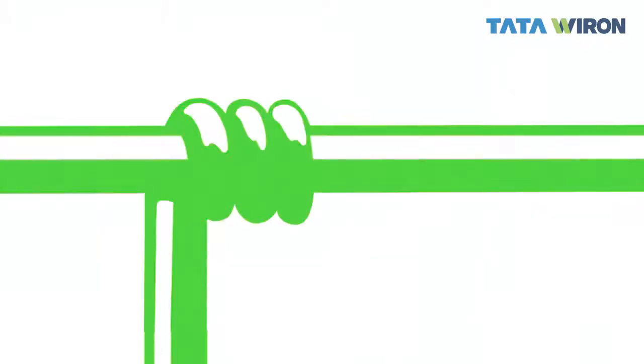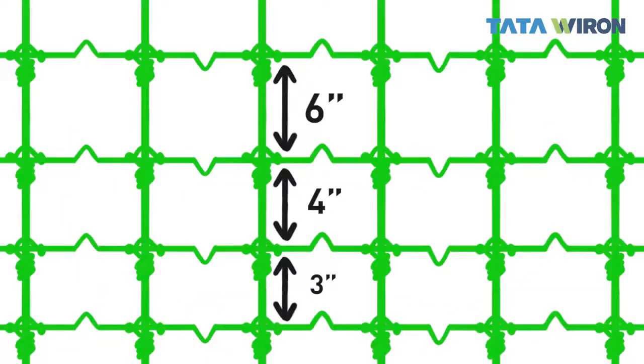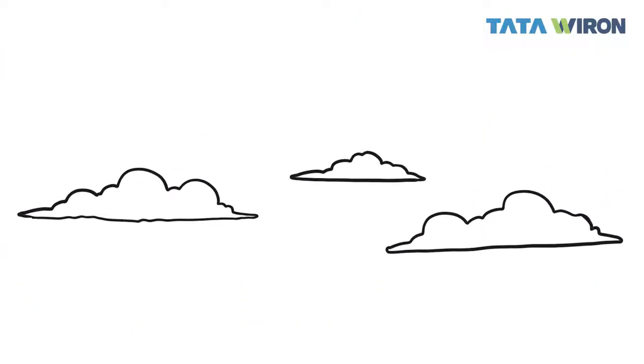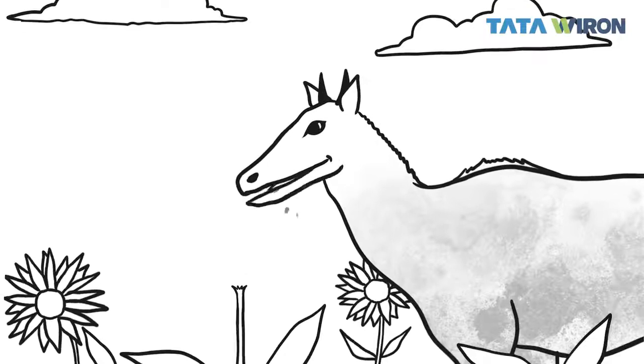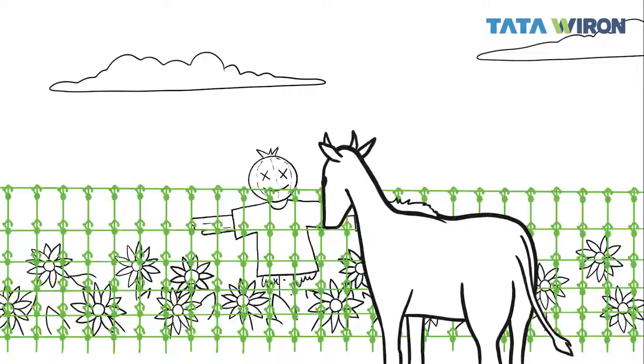The solid grip on the wires endure the test of time. The variable spacing on the wire keeps both smaller and bigger animals outside the fence and protects the farmer's assets.